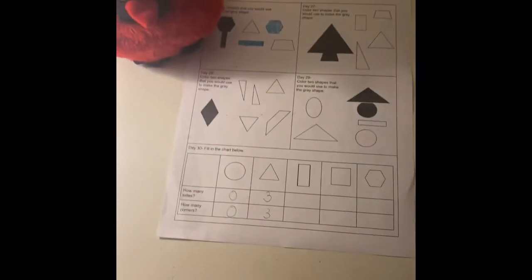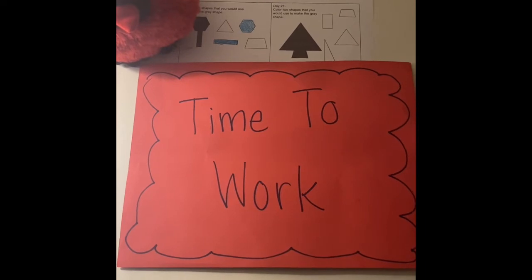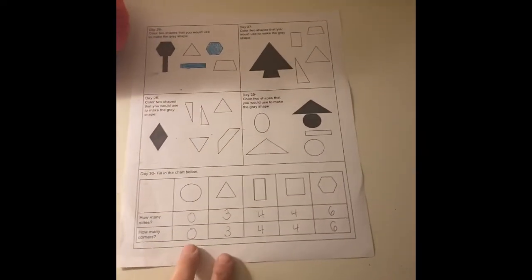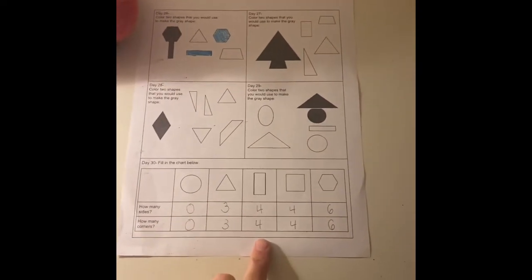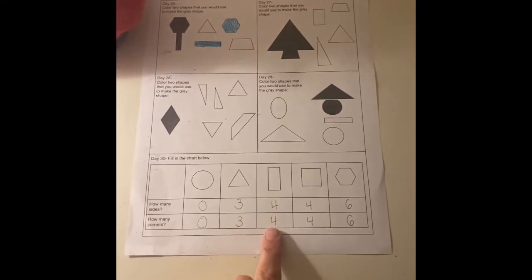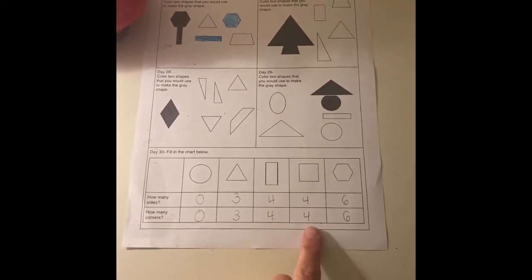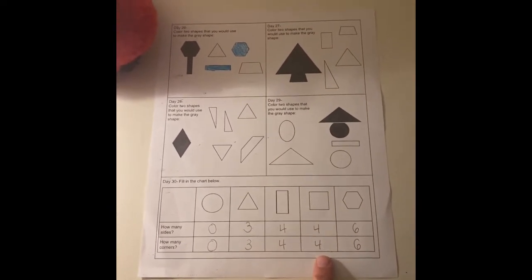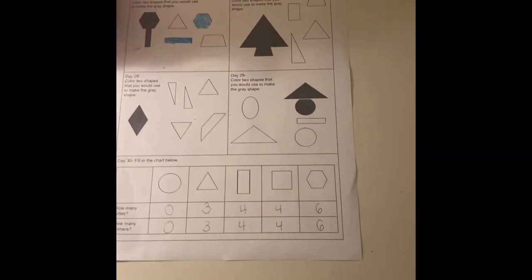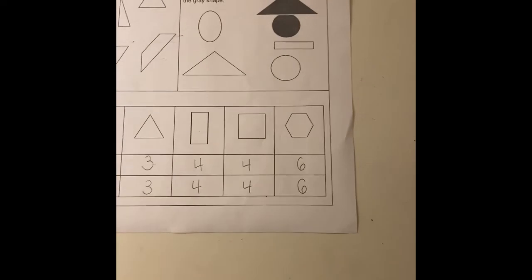Go ahead and pause the video and do your paper. All right everybody, let's check your answers. We did the first two together. A rectangle has four sides and four corners. A square also has four sides and four corners. And the hexagon — a hexagon has six sides and six corners.